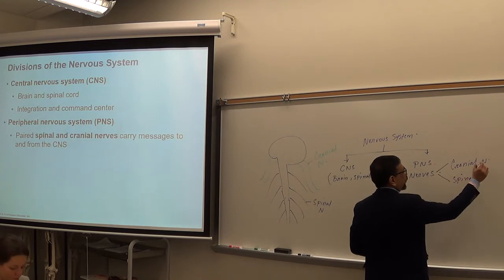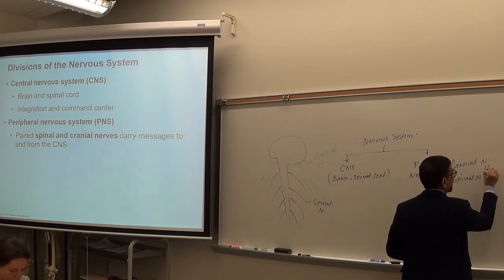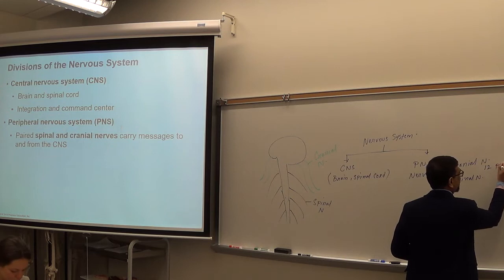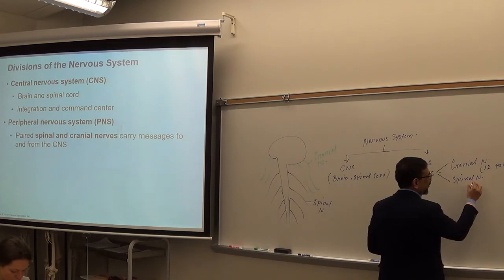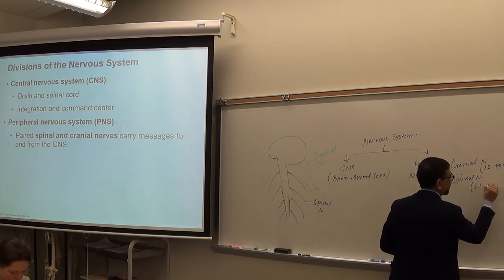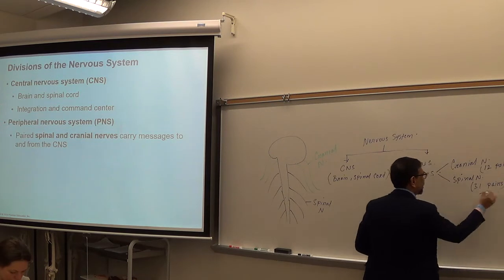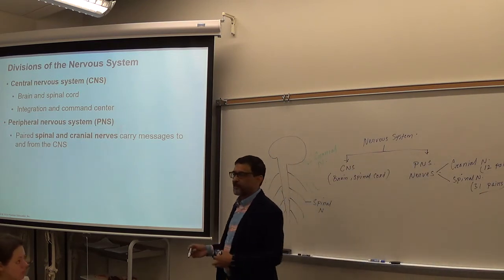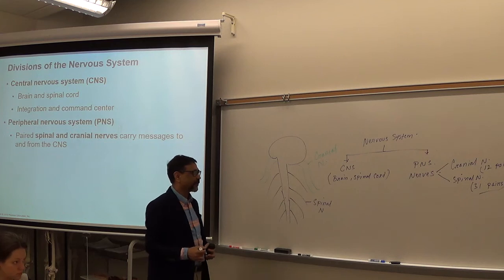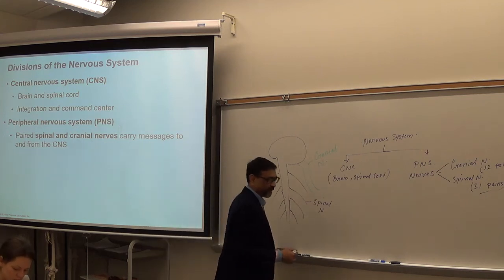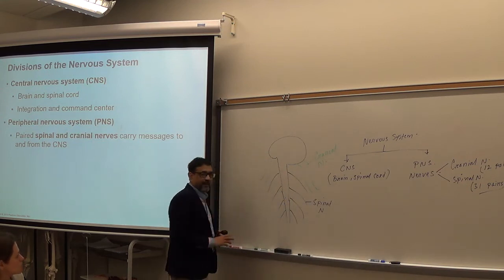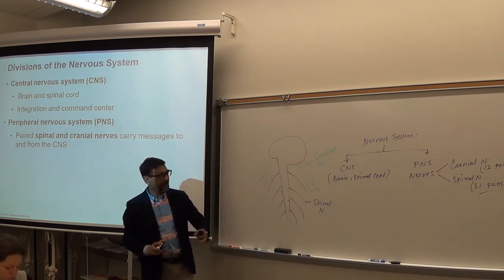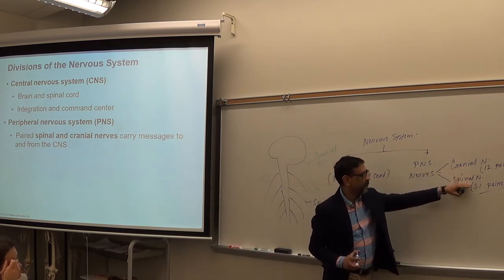We have a total of twelve pairs of cranial nerves and thirty-one pairs of spinal nerves. That is the anatomical classification of nerves — cranial nerves and spinal nerves.